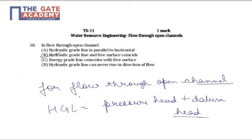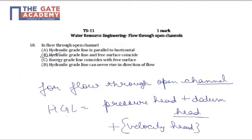For open channels, the equation of the hydraulic grade line is the sum of pressure head plus datum head. If we add velocity head to these two terms it becomes the total energy line, but right now we are talking about HGL, so the velocity head term will not be considered.